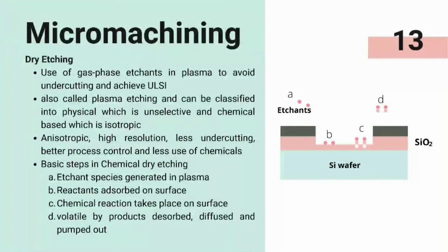Dry etching employs use of gas phase etchants in plasma to avoid undercutting and achieve ultra-large scale integration. Dry etching is also called plasma etching and can be classified into physical, which is unselective, and chemical-based, which is isotropic. Dry etching is characterized as anisotropic in nature, with high resolution, less undercutting, better process control, and less use of chemicals.